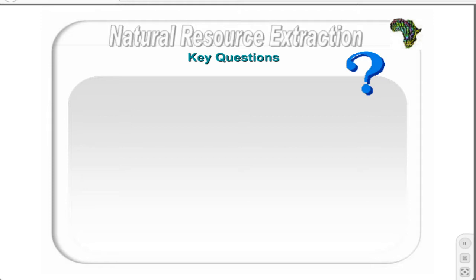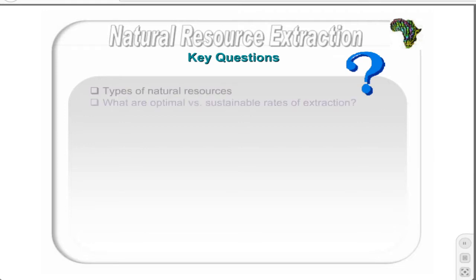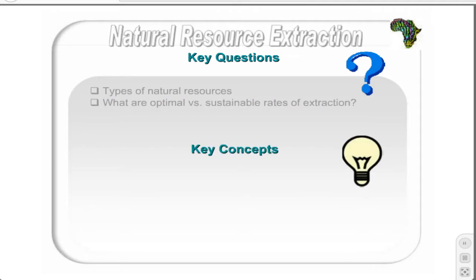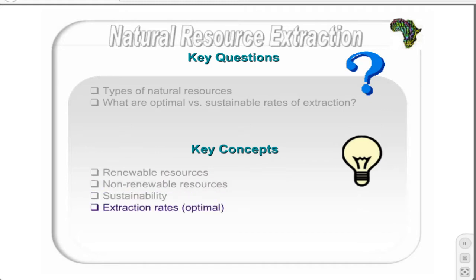The fourth chapter discusses the economics of natural resource extraction. The key questions addressed are: what types of natural resources are there and what are the differences between them? How are optimal rates of natural resource extraction determined and are these rates sustainable? The key concepts discussed are renewable resources, non-renewable resources, sustainability, extraction rates, and maximum sustainable yield. Remember to add these to your glossary.